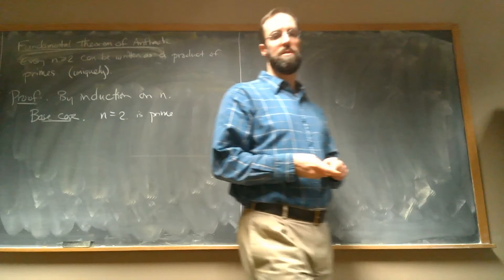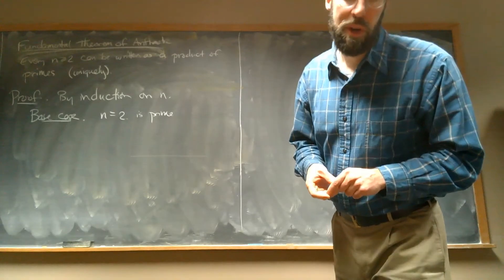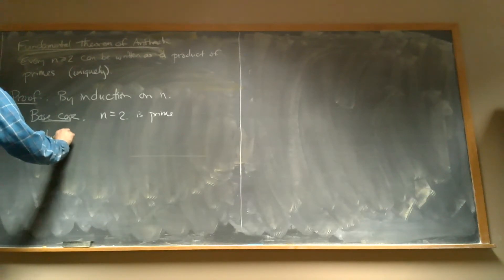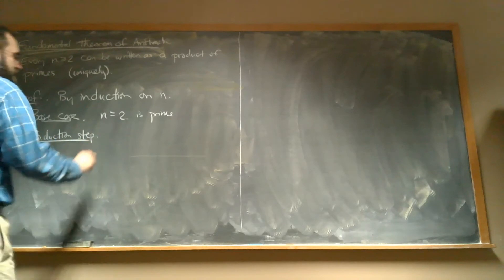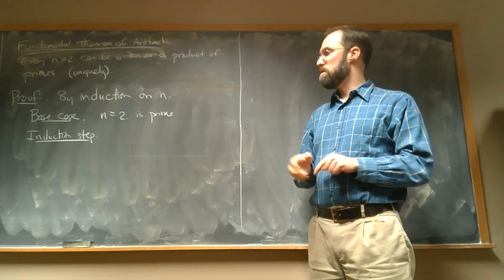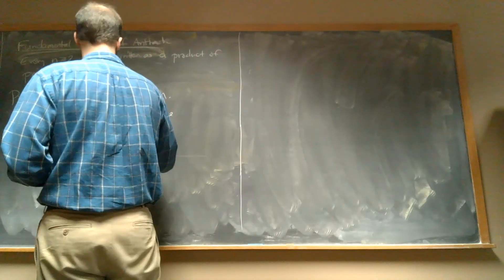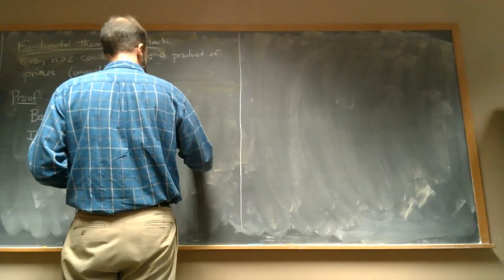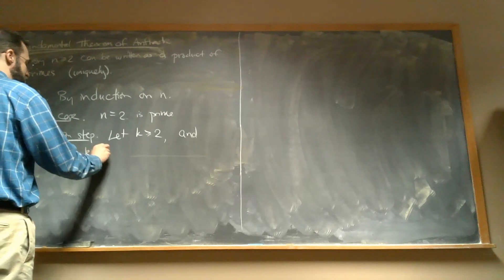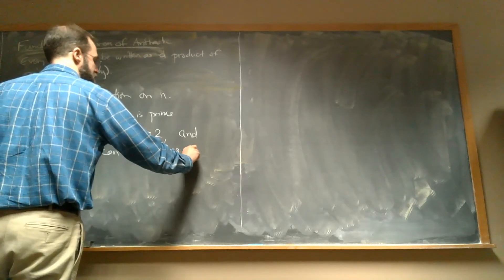So that counts, right? 2 is a prime, so it is a product of primes that's just itself. Okay, for the induction step, and again, we're going to try a proof by normal weak induction and see what goes wrong. So for the induction step, we would say let K be some number.